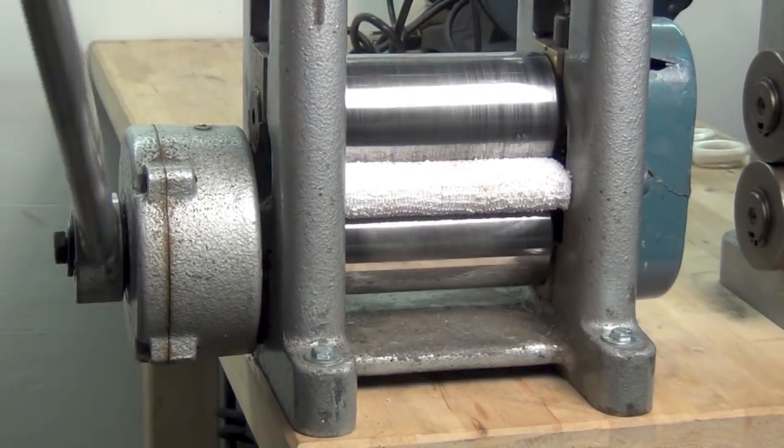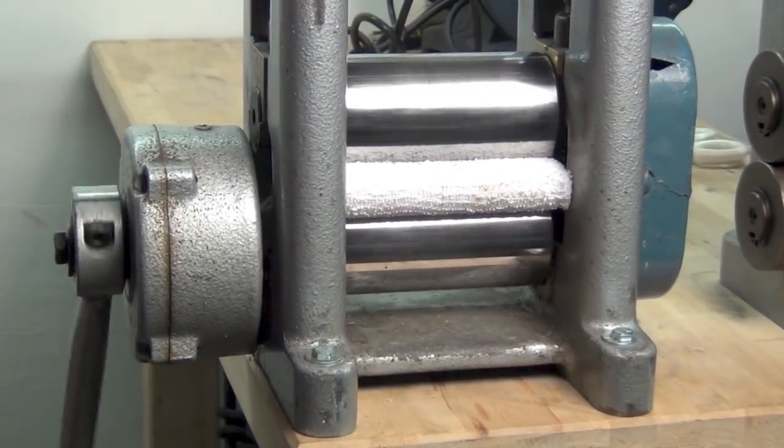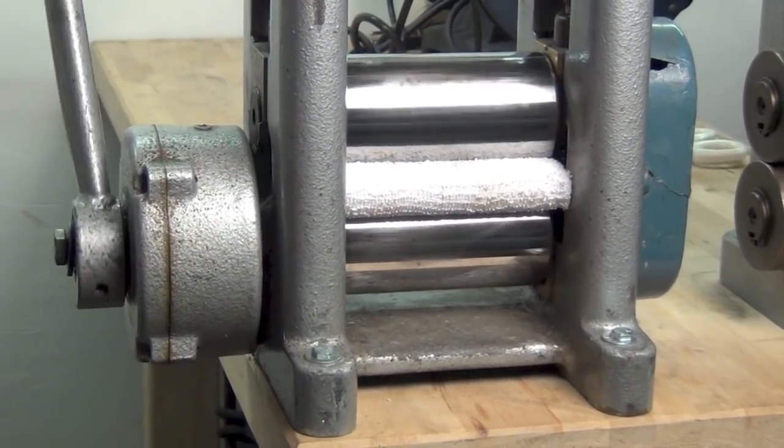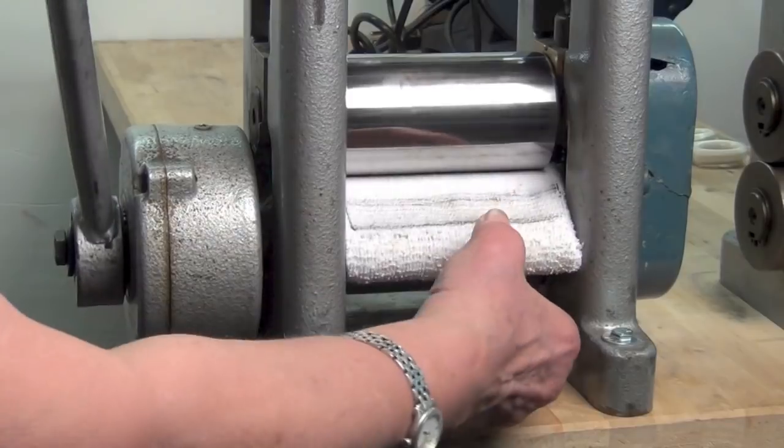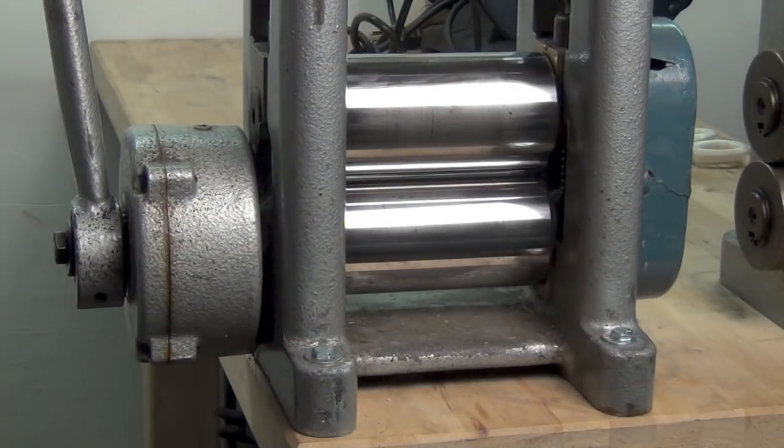This helps remove any excess polish. In addition to polishing the rollers, semi-chrome leaves an invisible protective coating. I clean my rolling mill after every use.